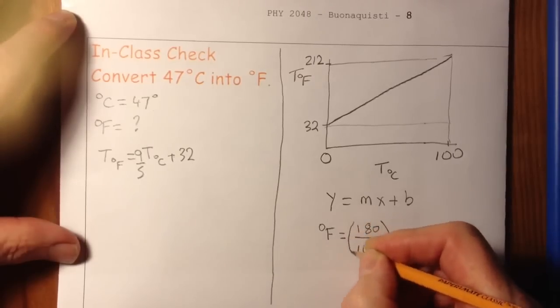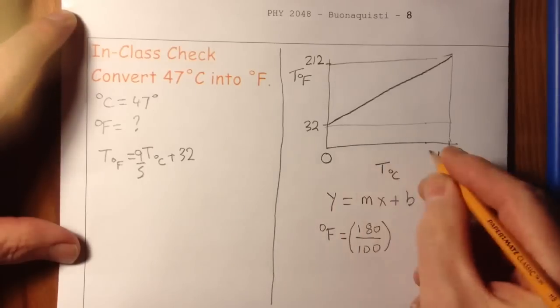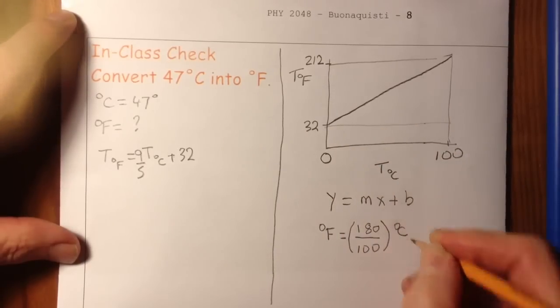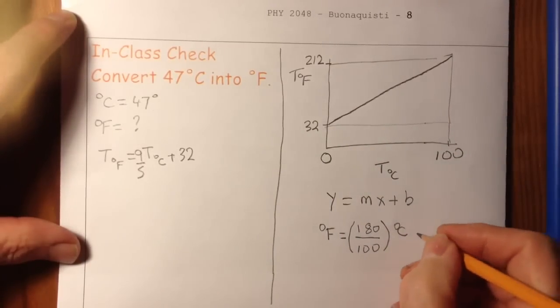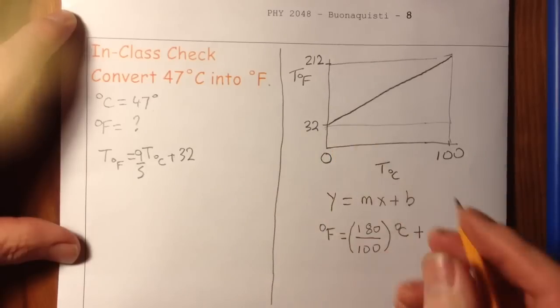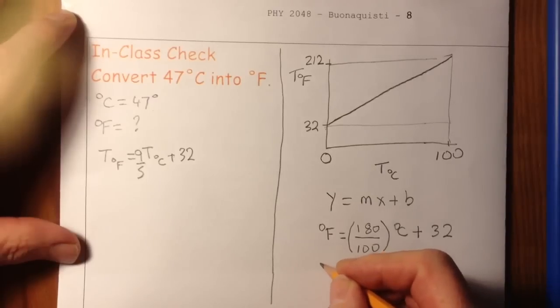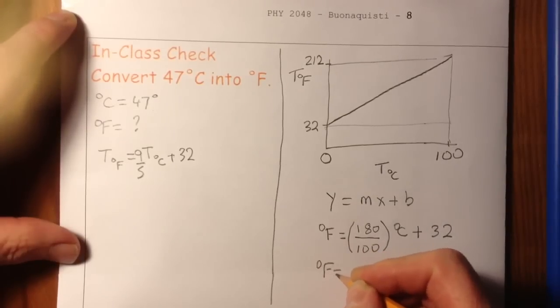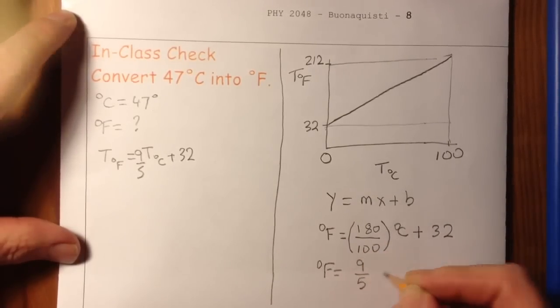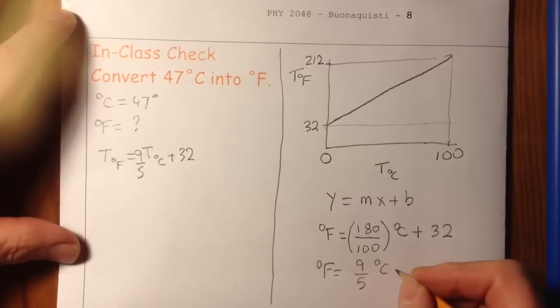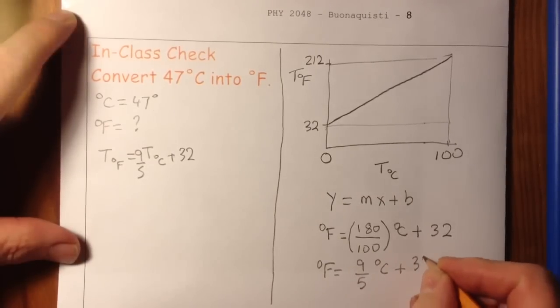So there's my slope and my x-axis is degrees C. And then I add on my y-axis intercept, which is 32. So I end up with degrees F is equal to 9 over 5 degrees C plus 32.